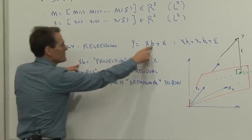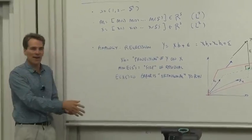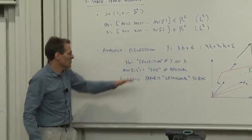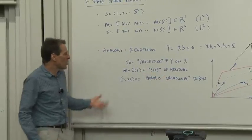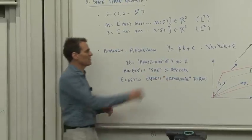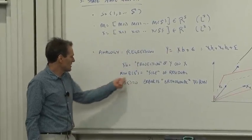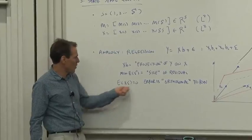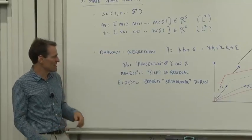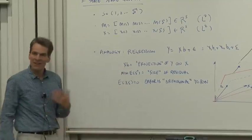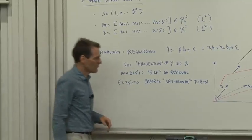We call x times b the projection of y on x. We call minimizing the size of the error the thing that the regression tries to do. When we notice that there's no second moment between the errors and the right-hand variable, we say the error is orthogonal to the right-hand variable. Orthogonal meaning at right angles. Where does that geometric language come from?